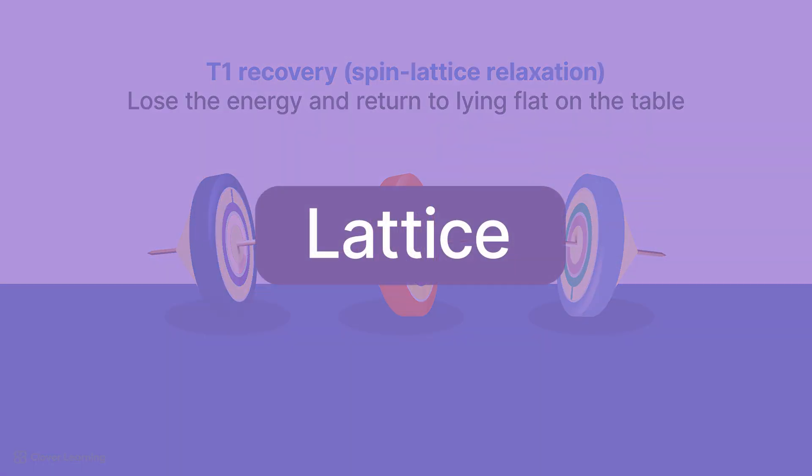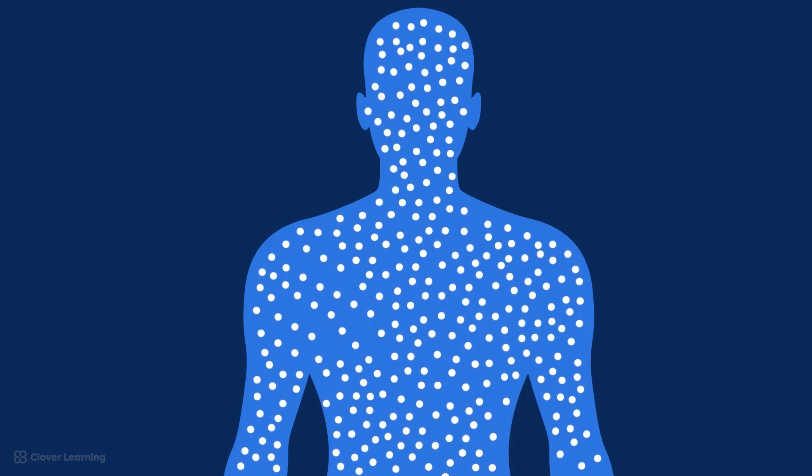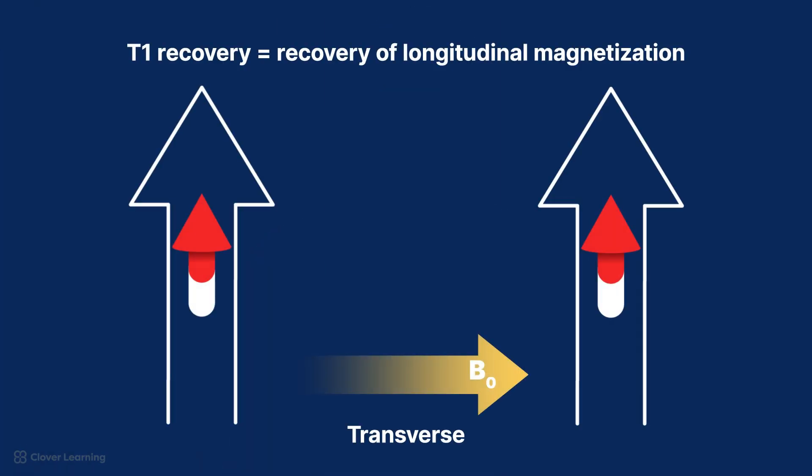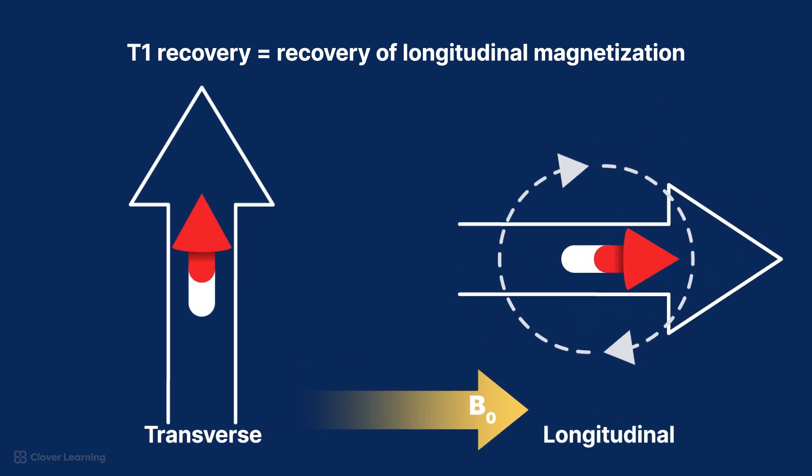It is determined by their interaction with the surrounding environment or lattice. For the tops, this lattice is air and friction from the table. For the nuclei, it is the surrounding molecules in the body. It is called recovery because as the nuclei lose energy, they recover their longitudinal magnetization.